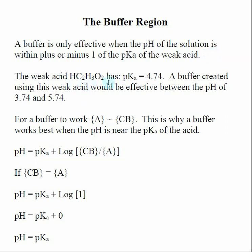If we look at acetic acid, we realize that the pKa of acetic acid is 4.74. A weak acid solution that contains its conjugate base, acetate, really only works as a buffer when the pH is plus or minus one of the pKa.